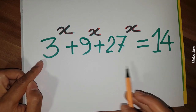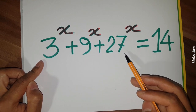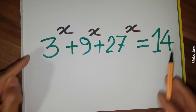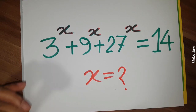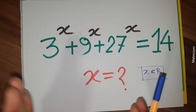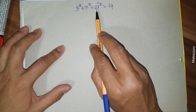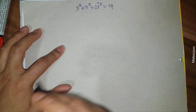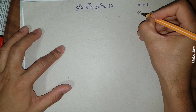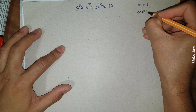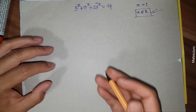Here is a math challenge: 3 to the power x plus 9 to the power x plus 27 to the power x is equal to 14. The question is, what is the value of x? This looks complex but the answer is simple. We have to find the value of x, and the condition is that x is a member of the real numbers, meaning the answer will be a real number.